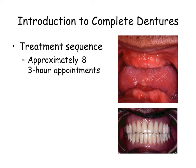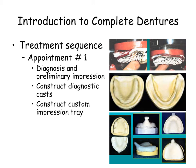It requires approximately eight three-hour appointments to fabricate a set of complete dentures. At the first appointment, you will conduct an examination of the patient. If the patient has an old denture, examine it closely. Preliminary impressions are then made, and custom impression trays are fabricated from the diagnostic casts.